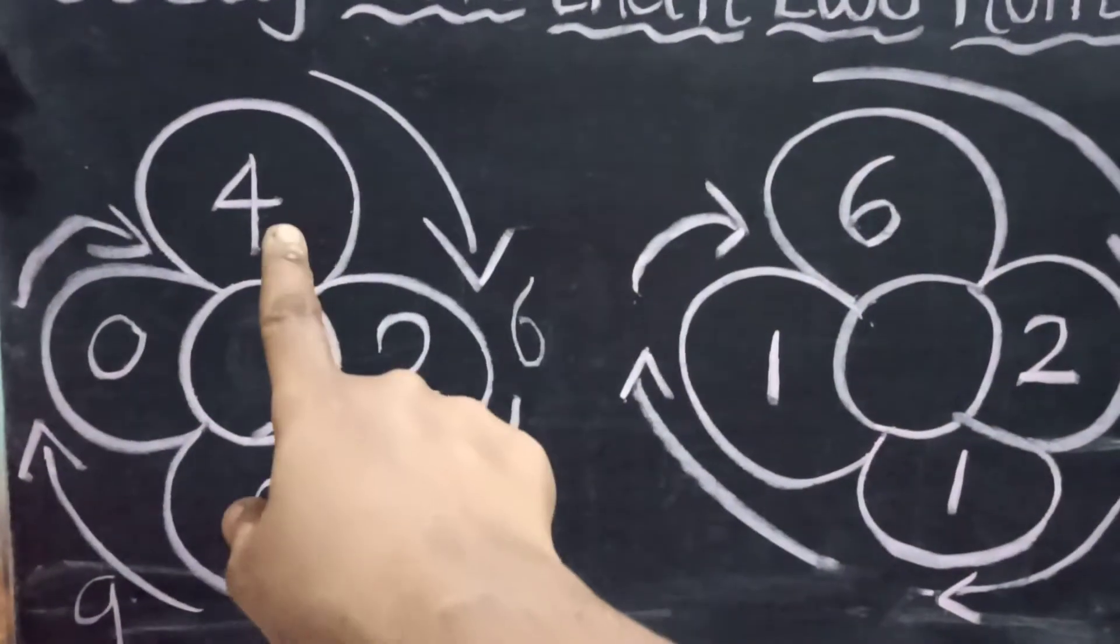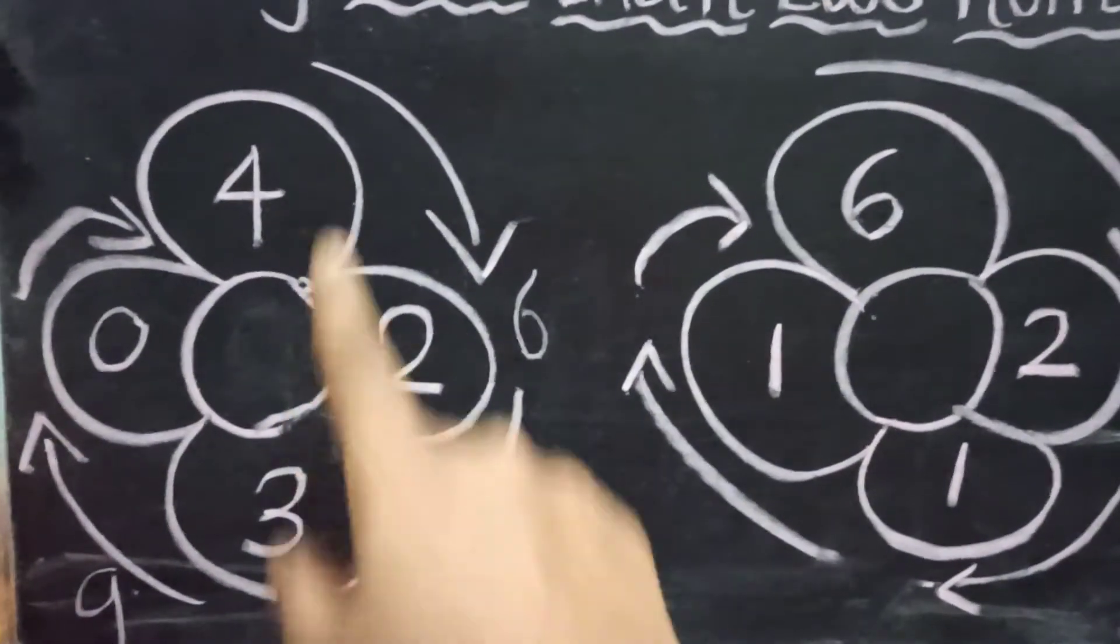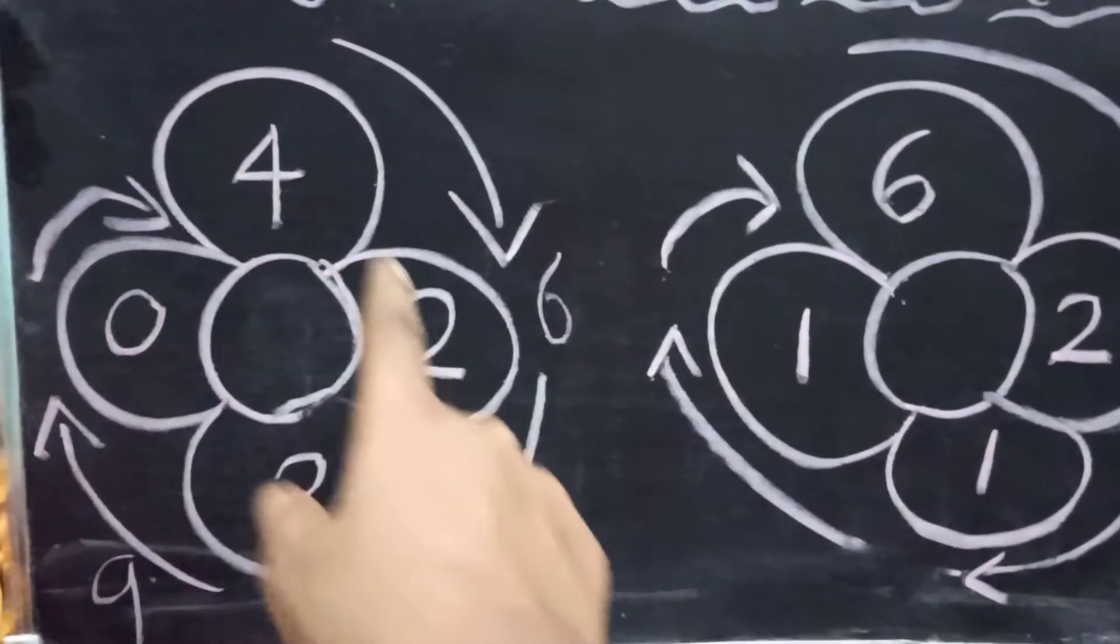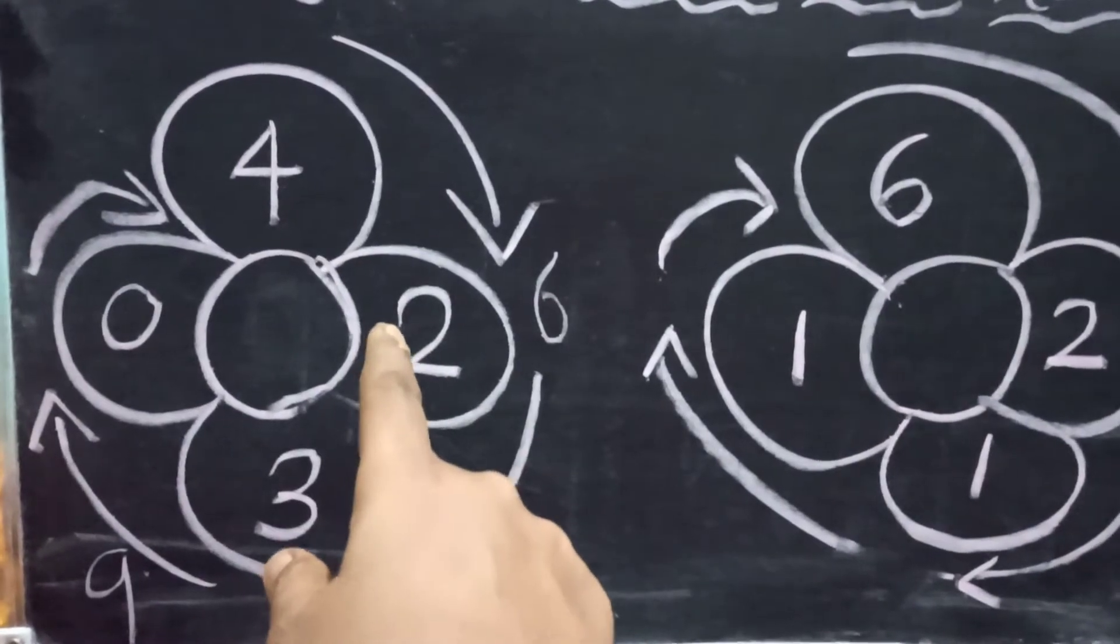Let us start from the first petal. So compare two petals, just check the two numbers, which is a bigger number? Four.